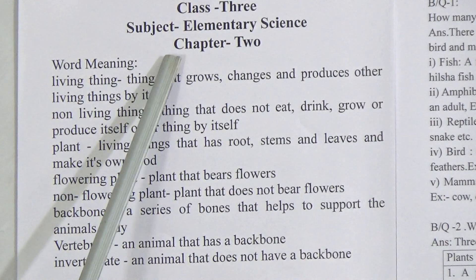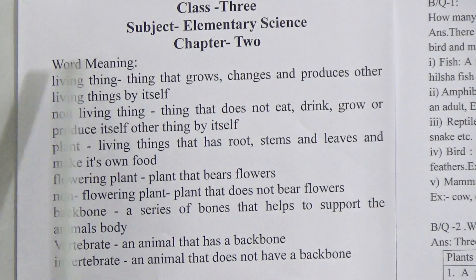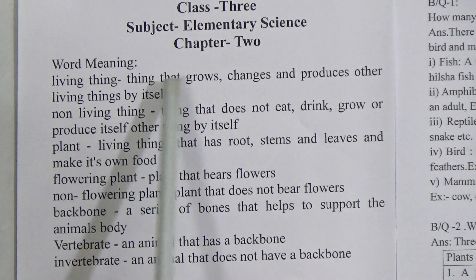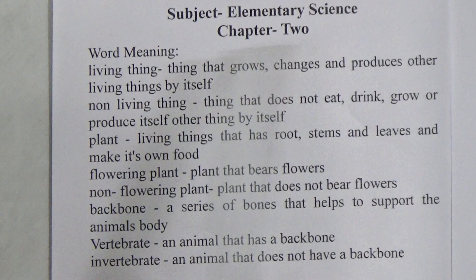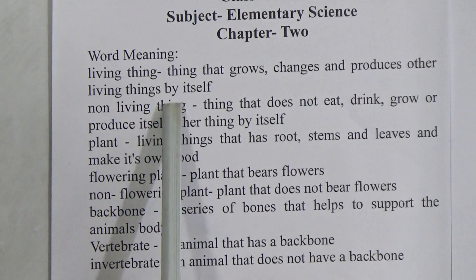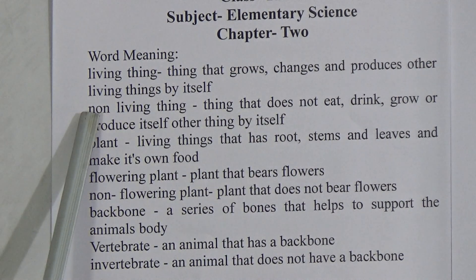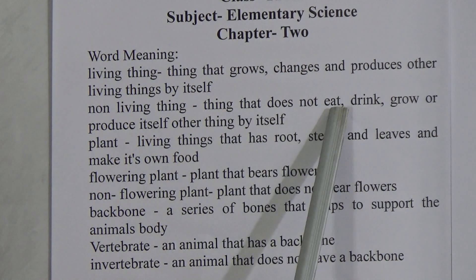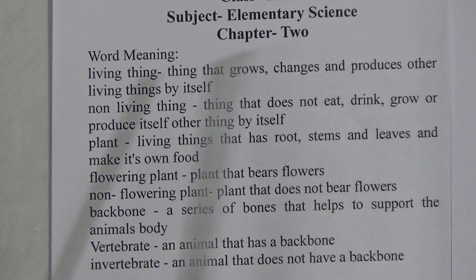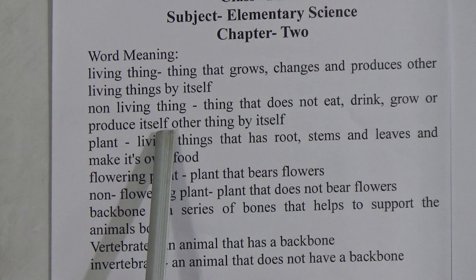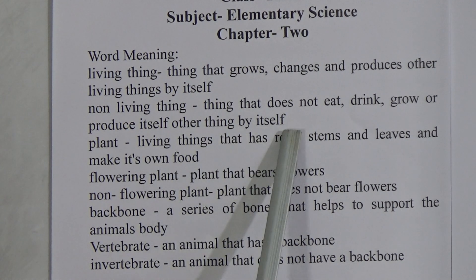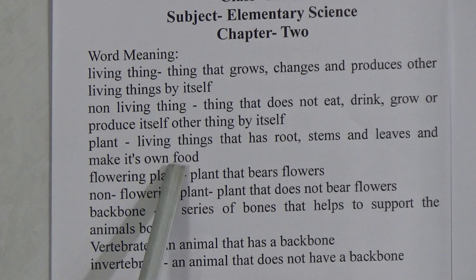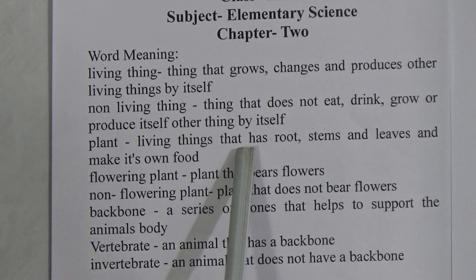Today's topic belongs to Chapter 2. Let us start with word meanings. The first word is 'living thing': a thing that grows, changes, and produces other living things by itself. Now, 'non-living thing': a thing that does not eat, drink, grow, or produce other things by itself.